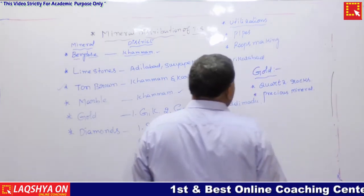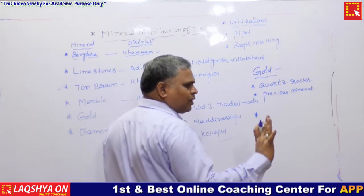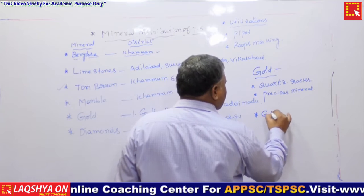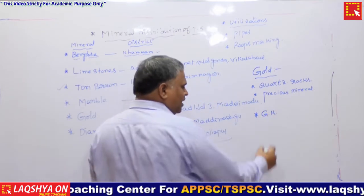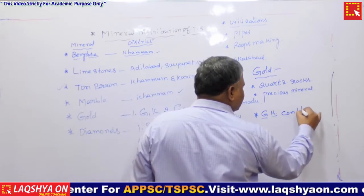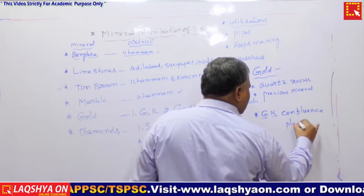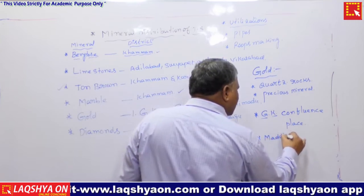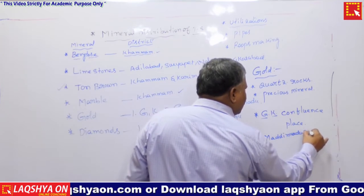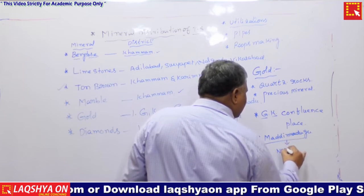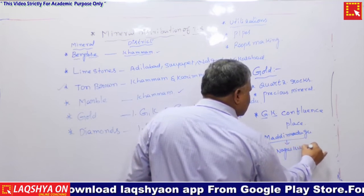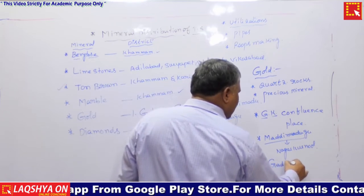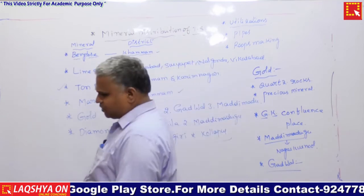In Telangana, gold reserves — not production — are available at the Godavari-Kinnarasani confluence place, Maddi Madugu which is located in Nagarkurnool district, and Godwal which is located in Jogulamba Gadwal district.